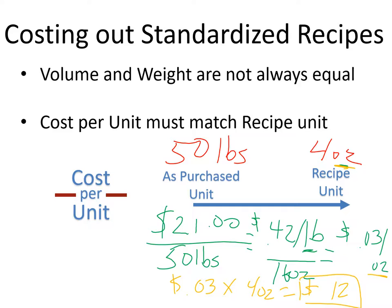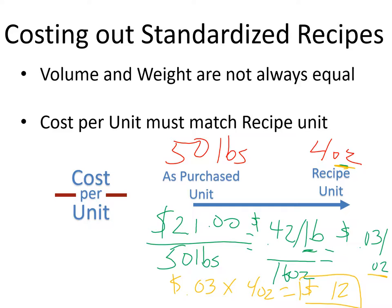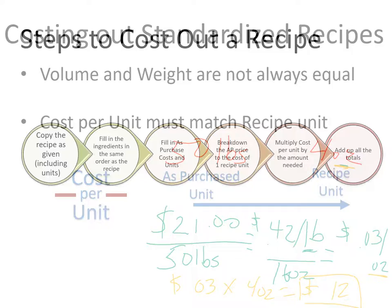Everyone should have this reference sheet. Keep it — it's going to help you throughout the rest of the semester. On this sheet, write the numbers 1 through 6 right above number one. These are the steps we're going to use to cost out a recipe. Step one: copy the recipe as given, including the units. The recipe units tell you where you need to end up, and the purchase units tell you where you're starting.